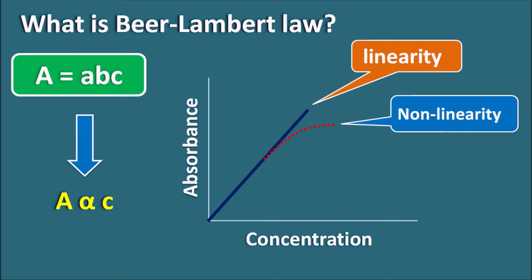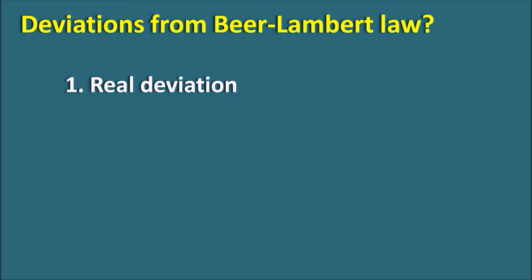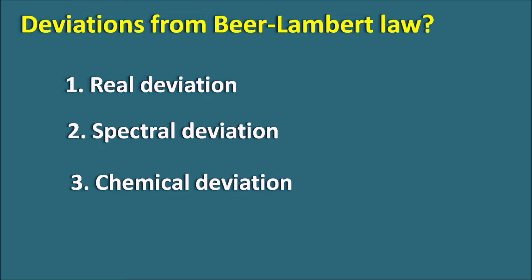The deviations from the Beer-Lambert law can be classified into three types. First is the real deviation. Second is the spectral deviation. Third is the chemical deviation. Let us start with the first one: real deviation.